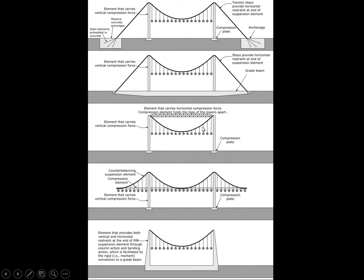We can also provide the horizontal force by putting a compression strut across the top, so the inward pull of these cables on the tops of these columns is resisted by an outward force in this compression strut. In this case the compression strut has been rendered as a truss in order to give it extra breadth against buckling, but also to keep it from collapsing downward under its own self-weight.